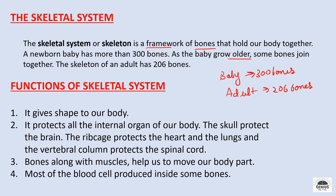Functions of the skeletal system. Our skeletal system gives shape to our body. It also protects our internal organs — like the skull protects our brain, the ribcage protects our heart and lungs, and the vertebral column protects our spinal cord. Bones along with muscles help us to move our body parts. Most of the blood cells are produced in our bones.